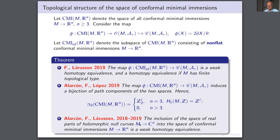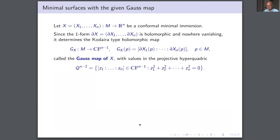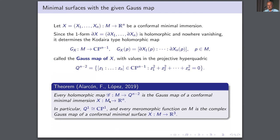One more result in the same spirit: you can prescribe the Gauss map. For any map that could be the Gauss map, you can find a minimal surface whose Gauss map is exactly this given map. In dimension three, the Gauss map goes to CP¹, so it is a meromorphic function on M; the theorem says that for every meromorphic function on M, there is a minimal surface having this function as its Gauss map. This is easy if M is the disk but becomes non-trivial for higher connectivity.